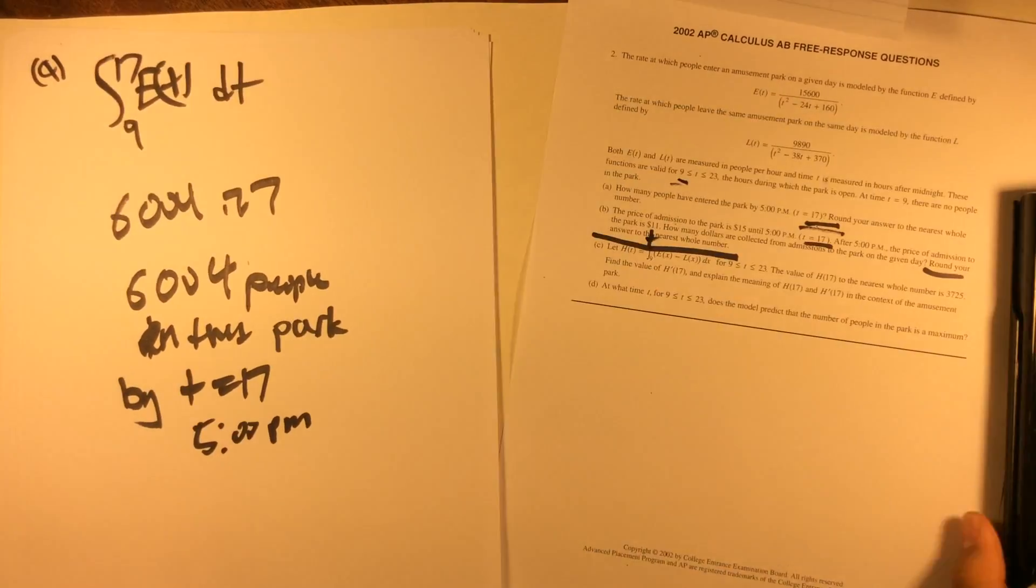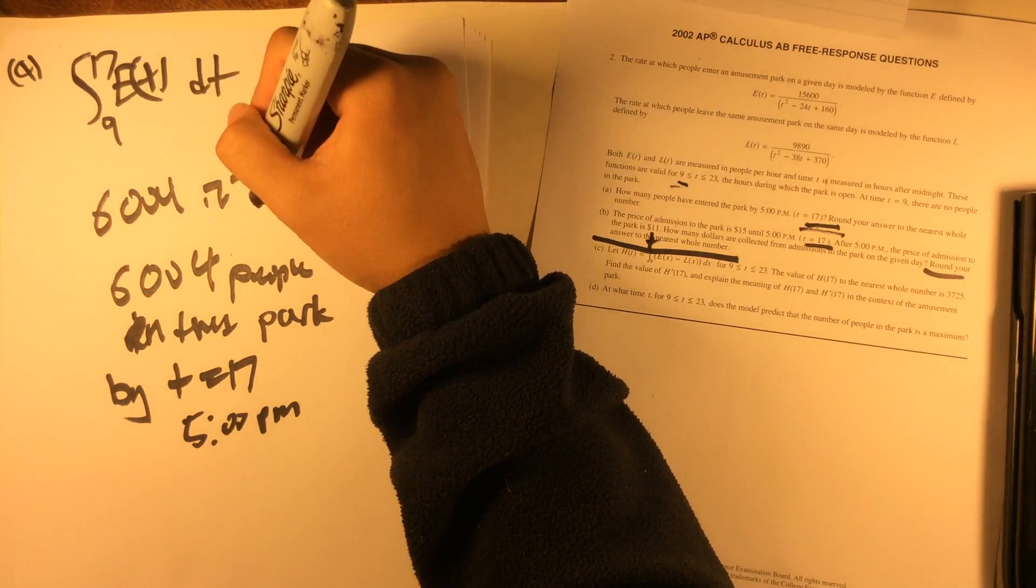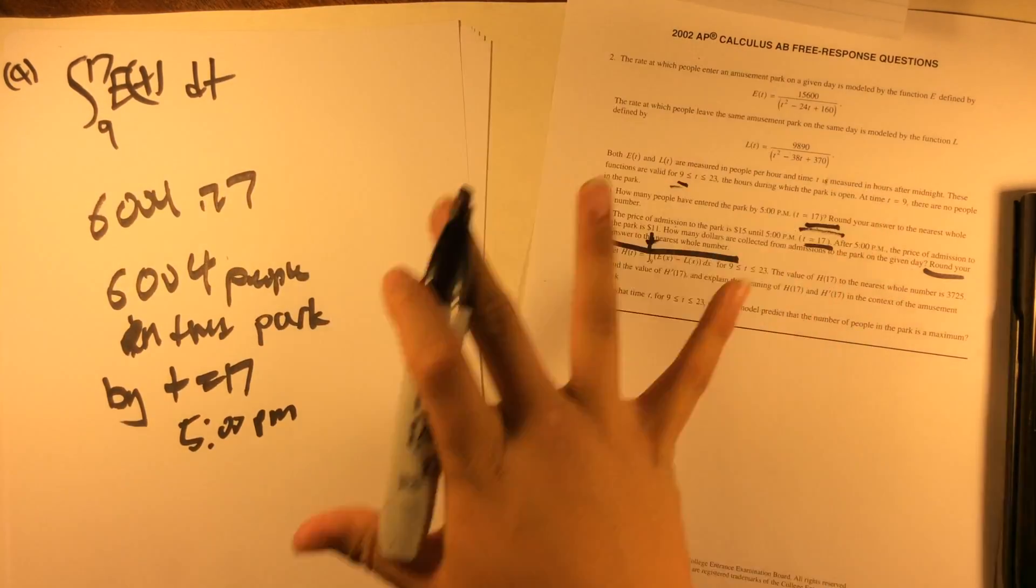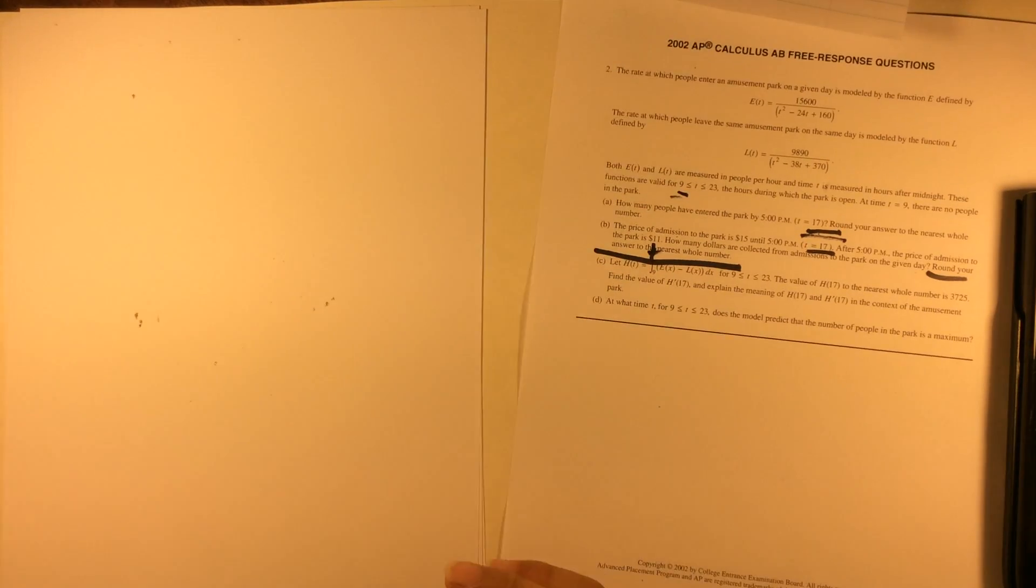Alright, and that's pretty simple. You don't need to add any initial condition, because at the time of starting, there's no people in the park, it's empty. And that's it, number A.